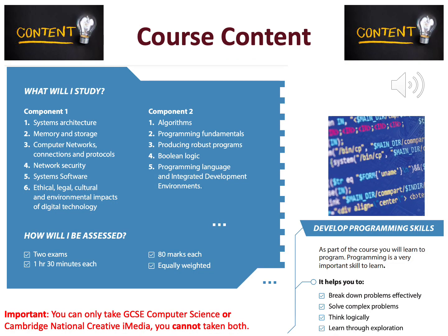So you've seen where you could go with GCSE Computer Science. What do we actually do in the GCSE? There are two papers. Paper 1 is the more theoretical paper, looking at system architecture, memory storage, and how computers actually work.